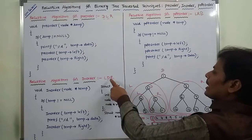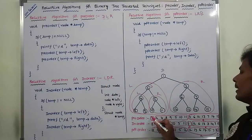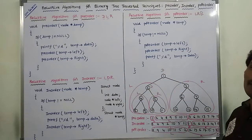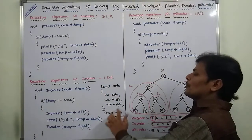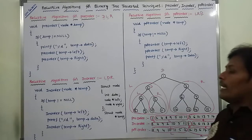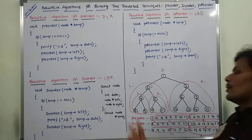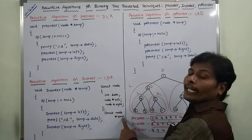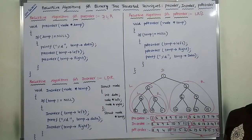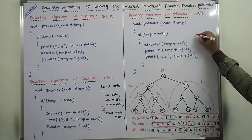In the post-order fashion, root node is always at the last. In the in-order fashion, root node is there in the middle. In the pre-order, root node is there at the beginning. This is the example and these are the recursive algorithms for in-order, pre-order, and post-order. The structure is used for creating a node containing three members: one data member and two self-referential pointer members (left and right). The temp pointer variable points to the root node and this structure is common for all three traversal techniques. Thank you for watching this video — please share and subscribe.